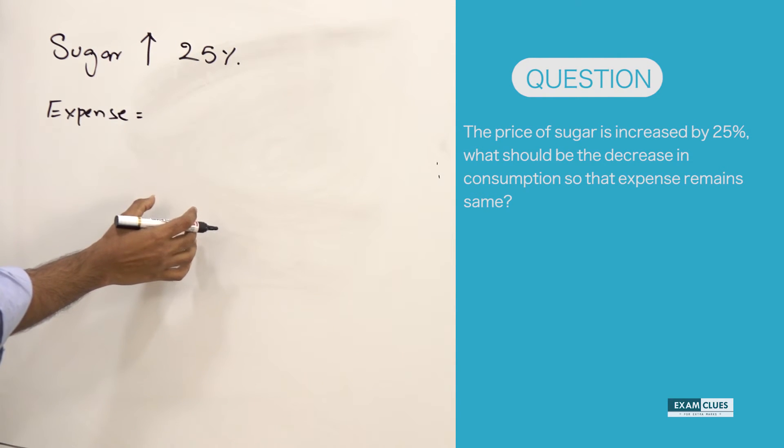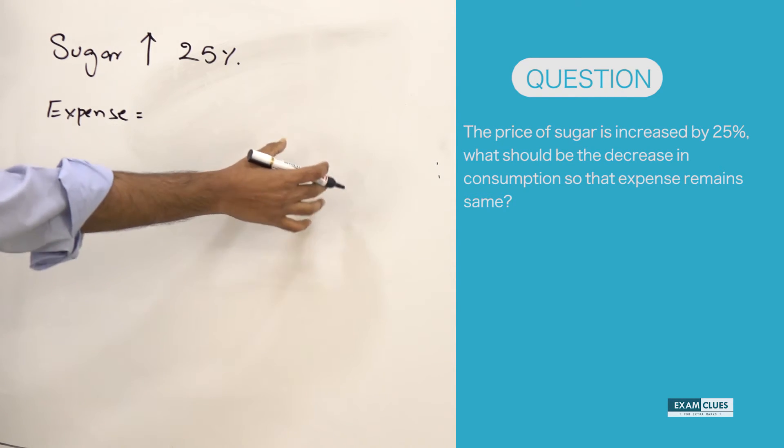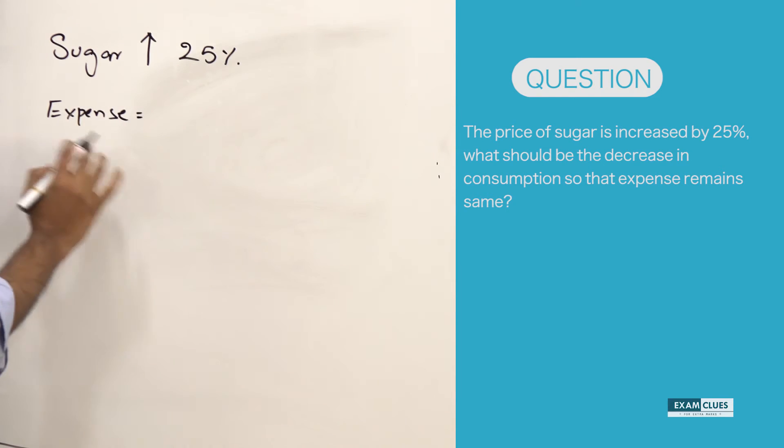If price is increased by 25%, automatically the whole expense would increase by 25%. Now the question is: what should be the decrease in consumption so that expense remains the same?